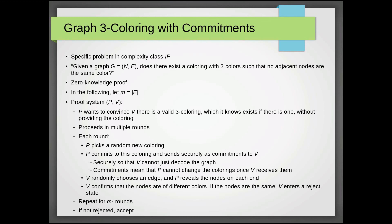So we develop our proof system PV. So P wants to convince V there's a valid three coloring, which it knows exists if there is one, without providing the actual coloring that allows this.